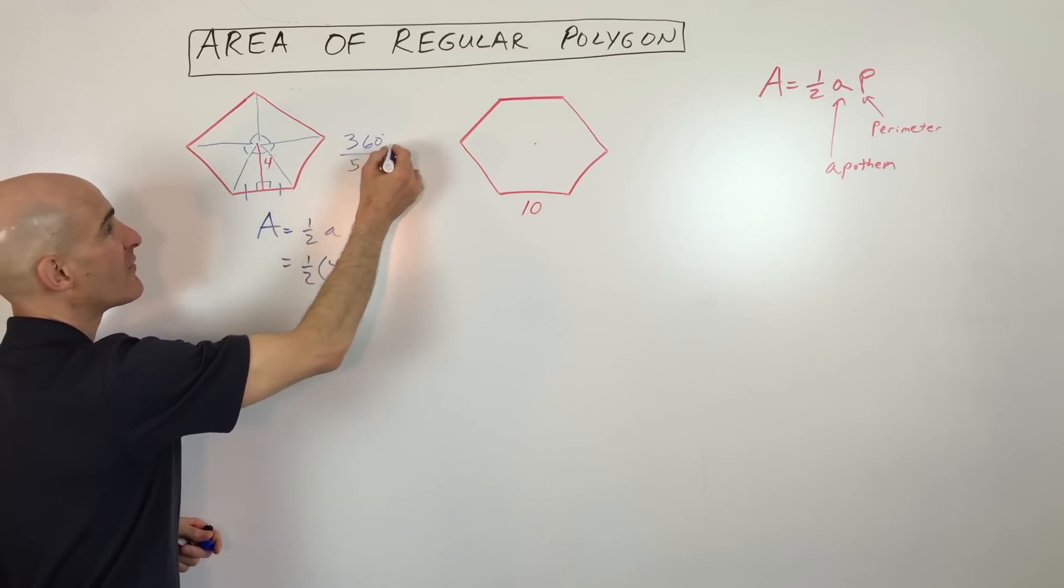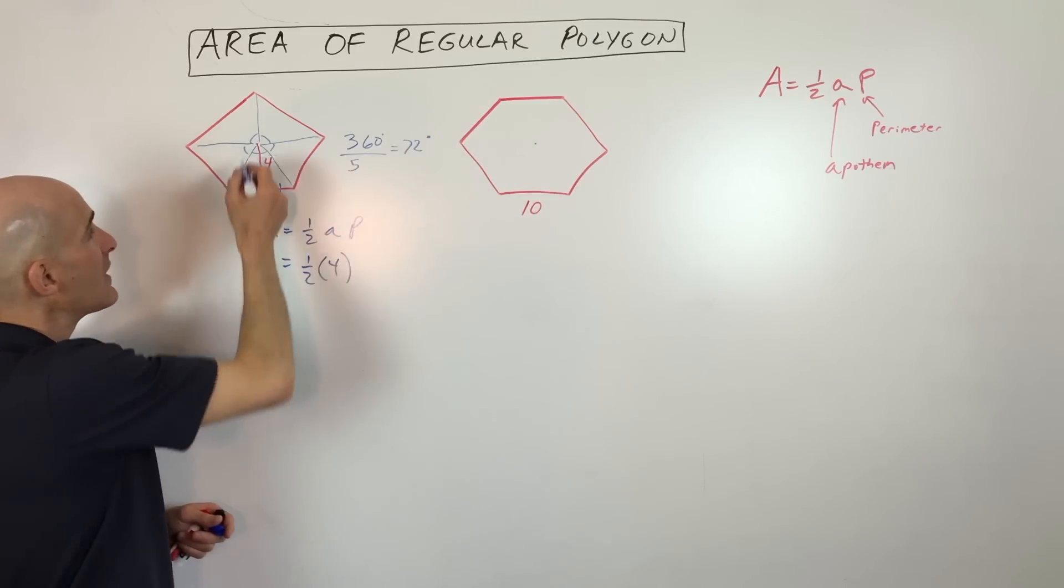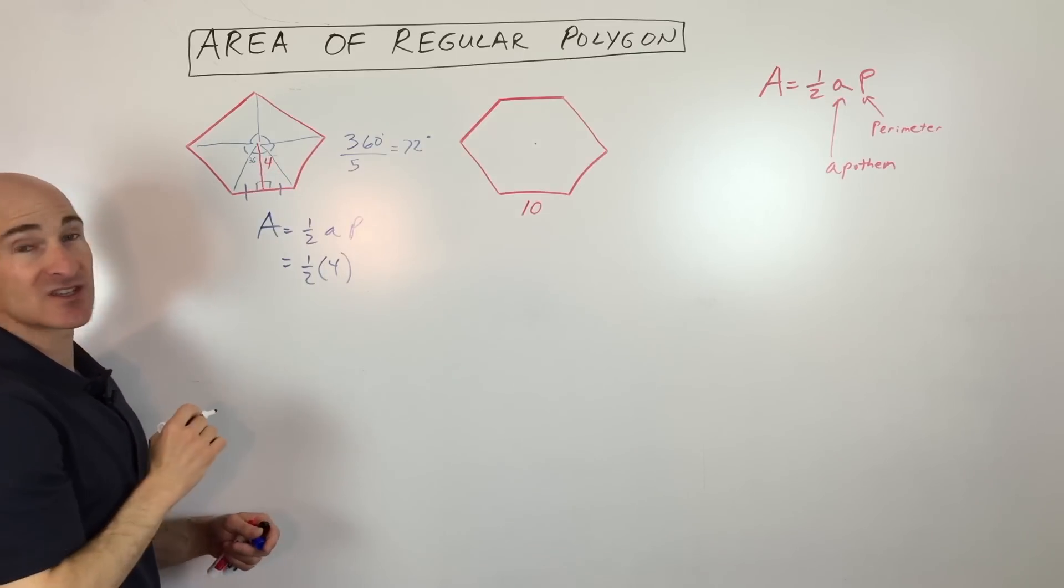So 360 divided by five is 72 degrees. Now when you drop the perpendicular, it's going to bisect that angle, so each of these is going to be 36 degrees.